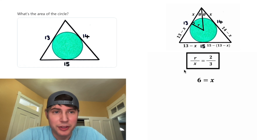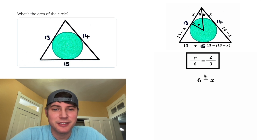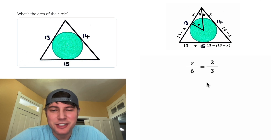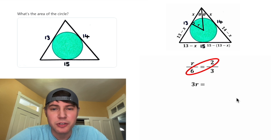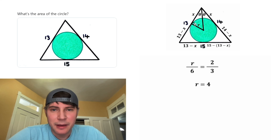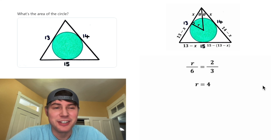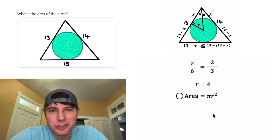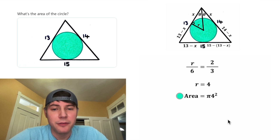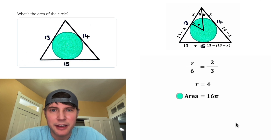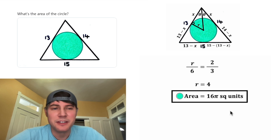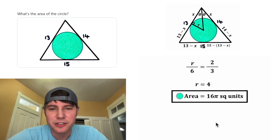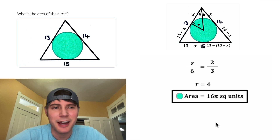Going back to our boxed equation R over X equals 2/3, we plug in X equals 6. Cross-multiplying gives 3R equals 12, so dividing by 3 gives R equals 4. The radius of our circle is 4. The area of a circle is pi R squared, so the area equals pi times 4 squared equals 16 pi square units. The area of the green circle is 16 pi square units.